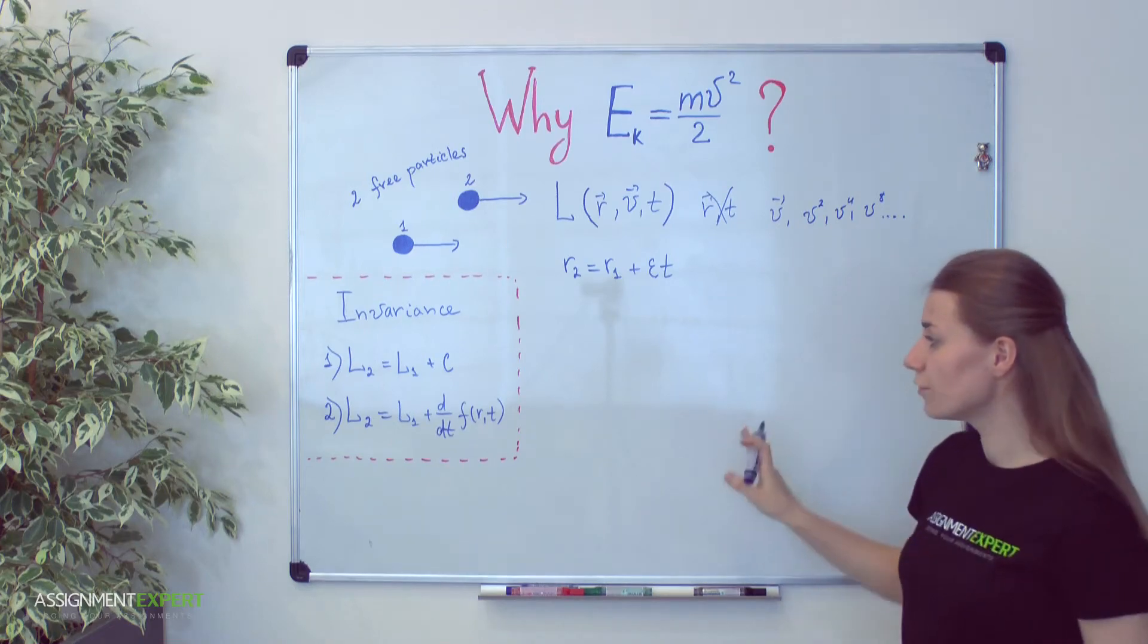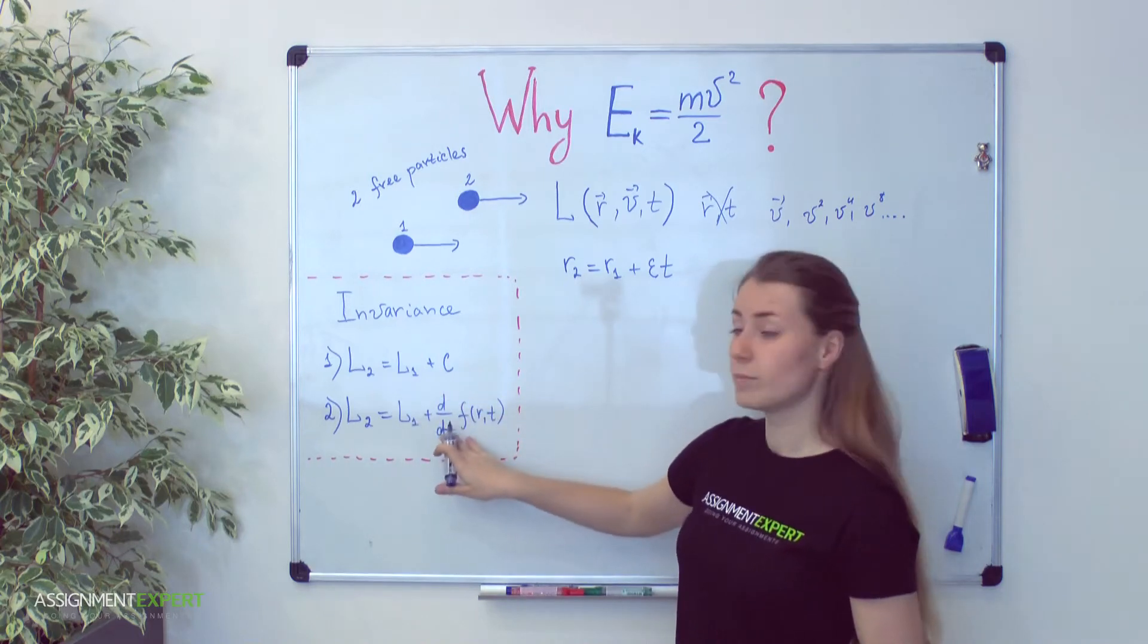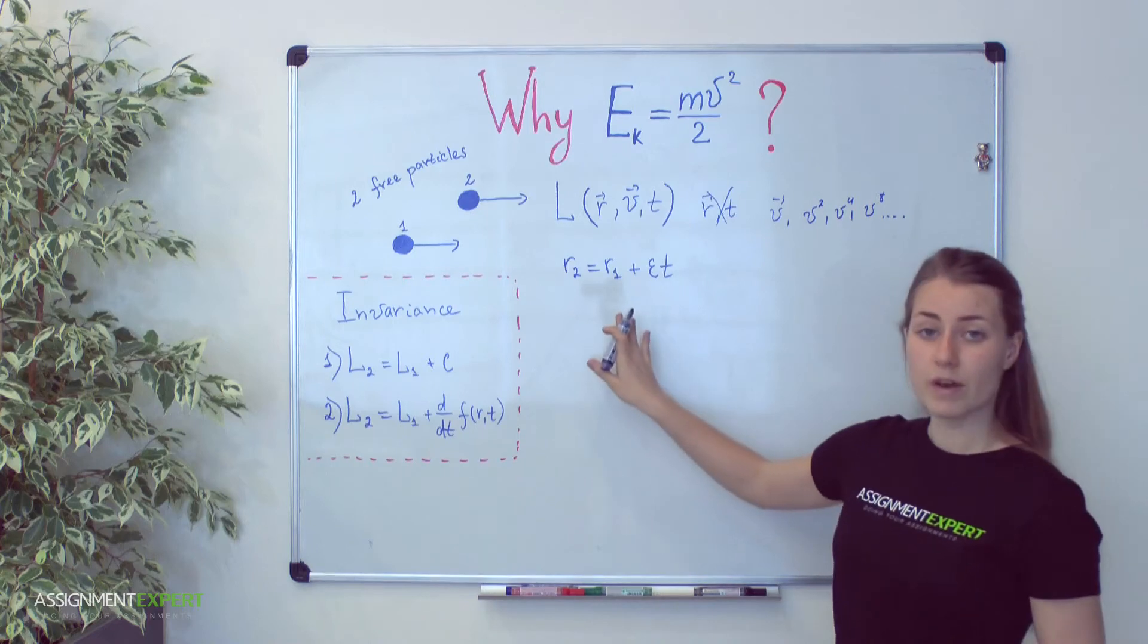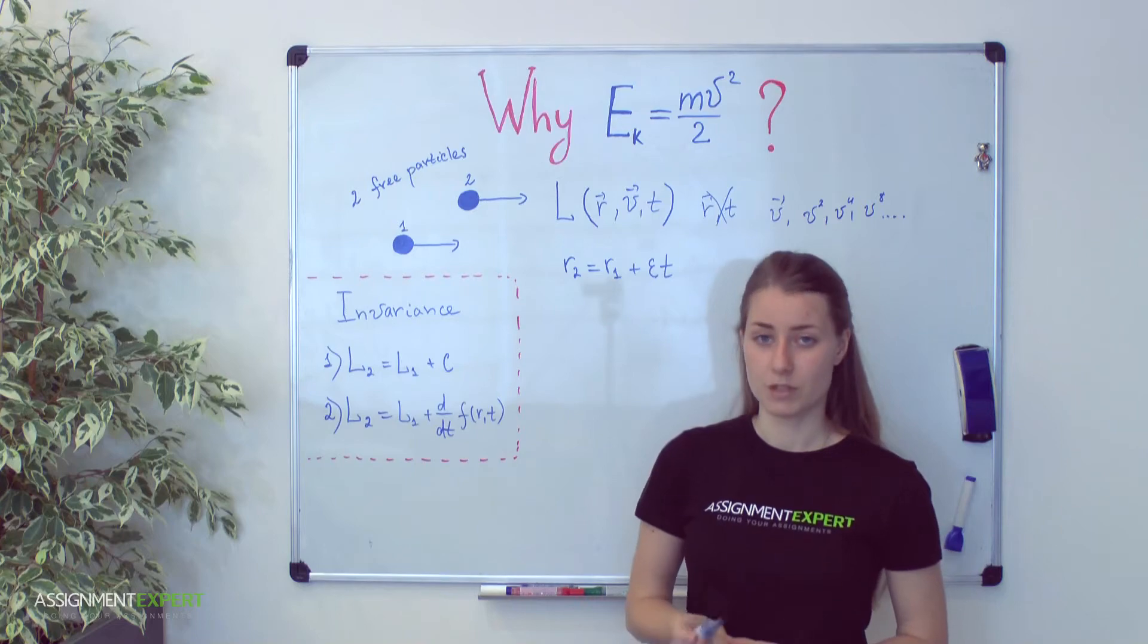What we are going to do now is to compare Lagrange function for different powers of velocity for the second, fourth and so on. If those Lagrange functions will be equal up to a constant or a full time derivative of coordinate function, the principle of Galilean invariance will be satisfied. If it's not true, such Lagrange function can never be physical.